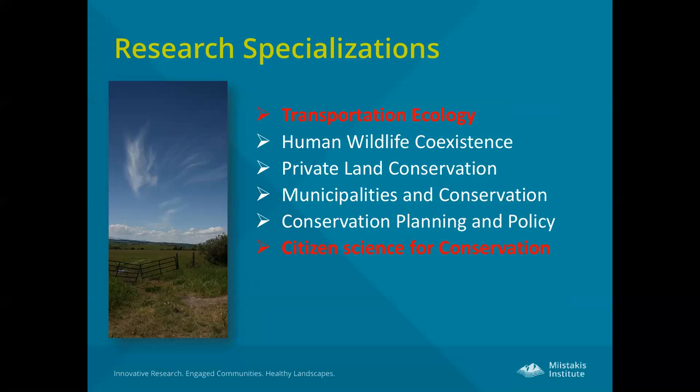Within transportation ecology, all of our work at Mastakis is really about generating awareness of the challenges that transportation infrastructure — primarily roads — poses to wildlife, and to promote workable solutions to these challenges and really trying to generate support for implementing those solutions. I'll also be touching on citizen science as a tool that Mastakis uses a lot within our conservation work, including our transportation ecology work.